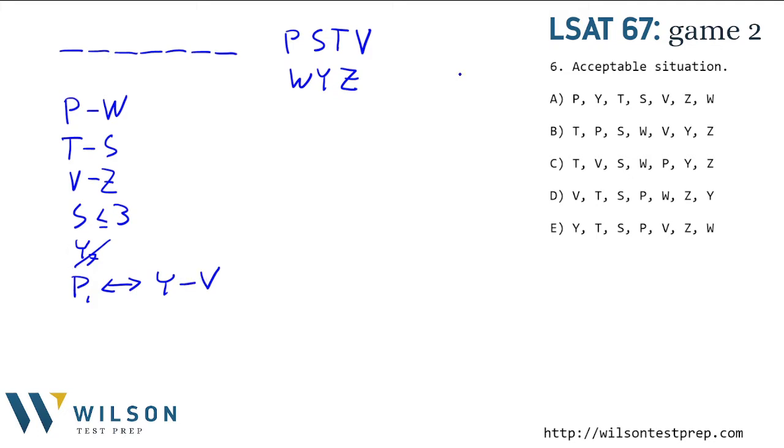So let's eliminate these one rule at a time. P before W, okay, C is out. T is before S, that one's good. V before Z is also good. S has to be one of the first 3, so A is out. Y cannot be 7th, so D is out. And now P is 1st if and only if Y is before V. So P is not 1st in either of the ones that remain, so we need to have instead V to be before Y, which is true here. Here we have Y before V, even though P is not 1st, so E is out, and B is correct for number 6.